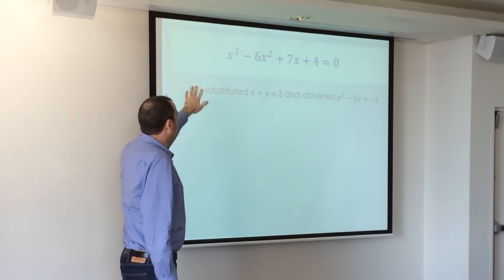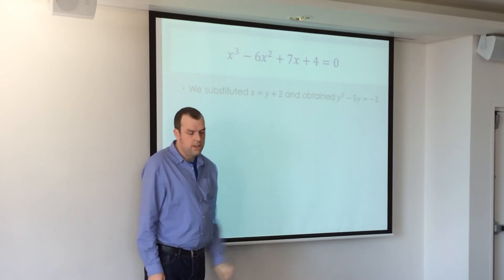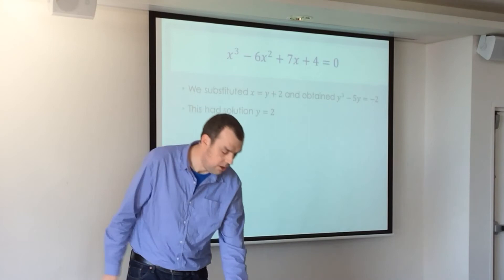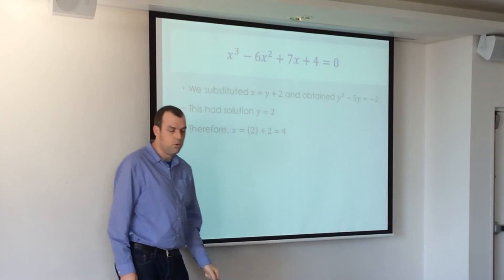Okay. So back to our original one in x, a general cubic. We made that substitution and arrived at that depressed cubic. So we solved that and found it had y equals two. So now we reverse substitute. Alright? X equals y plus two. So that's two plus two equals four.